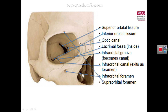This is the base of the pyramid; therefore it is a four-sided pyramid. The superior wall is formed by the orbital plate of the frontal bone anteriorly and posteriorly by the lesser wing of the sphenoid. The lateral wall is formed by the greater wing of the sphenoid posteriorly and the frontal process of the zygomatic bone anteriorly.